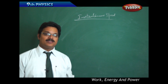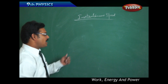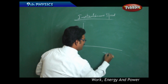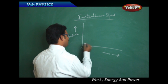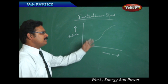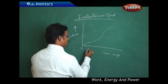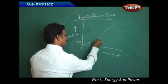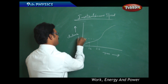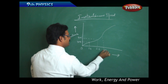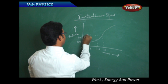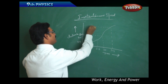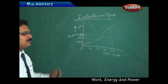Now, how can you find instantaneous speed or velocity, and how are numericals solved based on that? I'm going to draw a graph with distance on the y-axis and time on the x-axis. The graph follows a certain path. For example: at time 1 second, distance traveled is 3 meters; at 2 seconds, it is 9 meters; at 3 seconds, 13 meters; at 4 seconds, 25 meters.